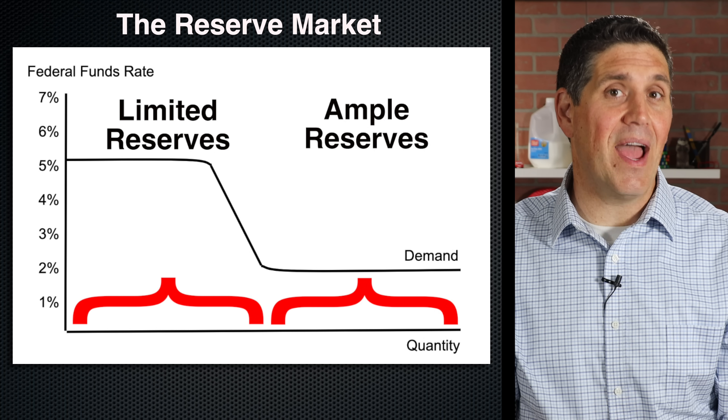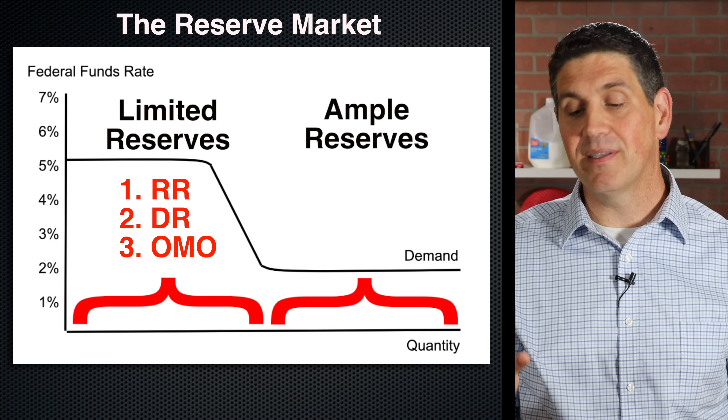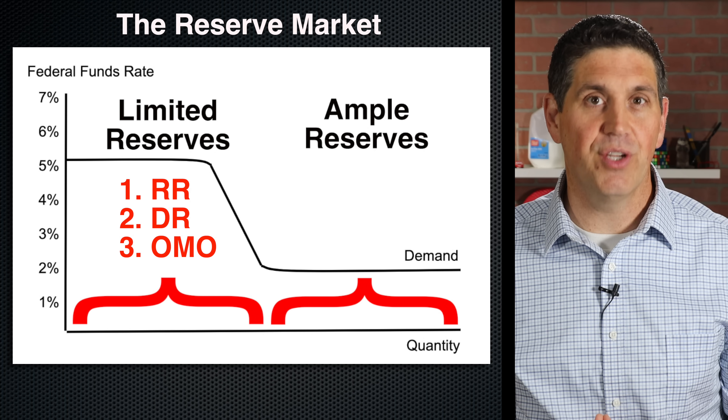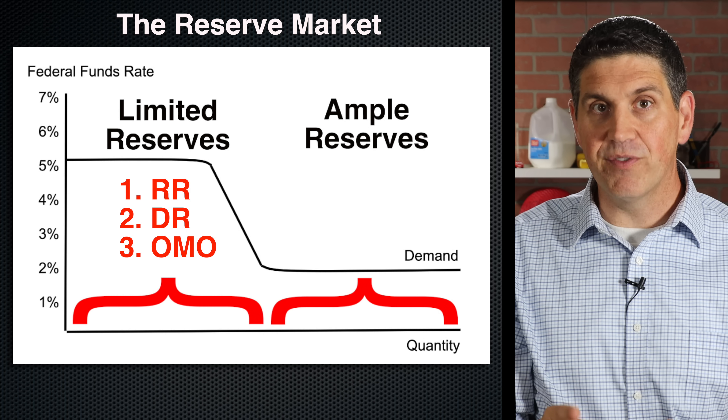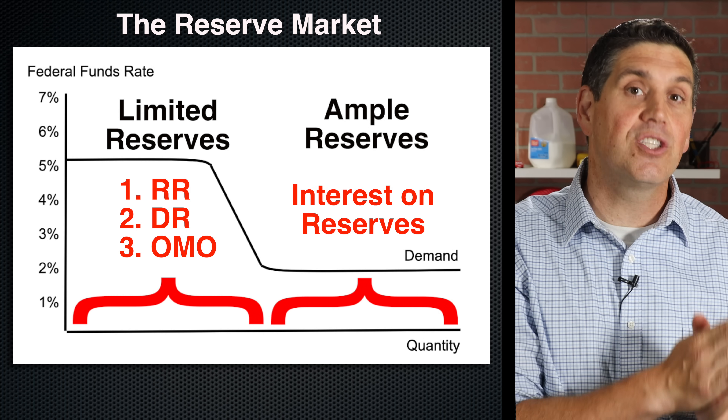Okay, so let's summarize. If there are limited reserves, the central bank will use one of the three tools of monetary policy, usually open market operations. But when there's ample reserves, those three tools don't really work, so instead the Fed changes interest on reserves. I'm going to put this back up on my wall — it gives you the three tools of monetary policy: the reserve requirement, discount rate, and open market operations. Those are all in your textbook. You also need to know about the tools the Fed uses when there's ample reserves, and that's interest on reserves.